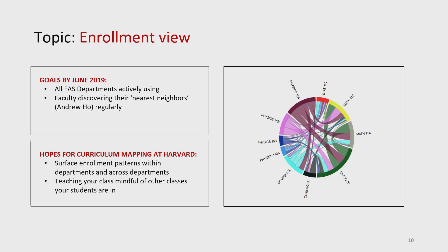Where do we want to be with this project one year from now? All FAS departments actively using a version of Enrollment View. Faculty discovering their nearest neighbor — and here we get to another curriculum mapping project, Andrew Ho, who we'll talk about in a minute. The nearest neighbor project has now sort of integrated a little bit with the Enrollment View project, and that's where we hope these things go: we begin to think of the synergies and the integrations.